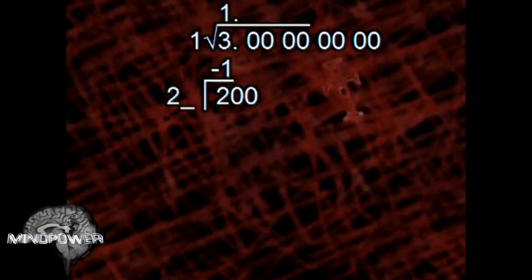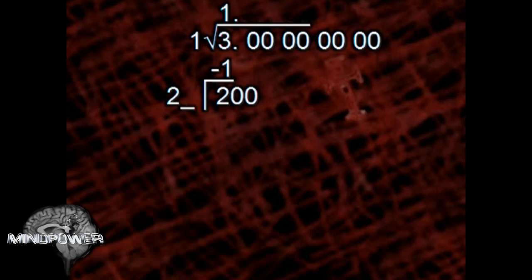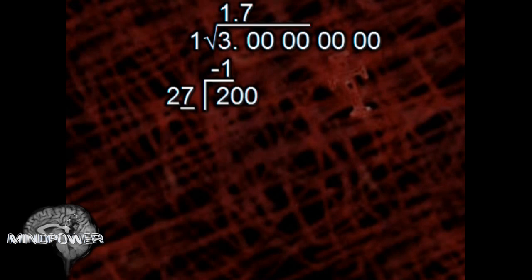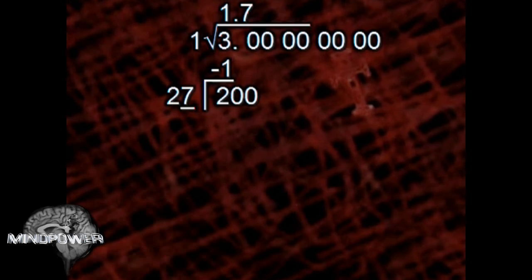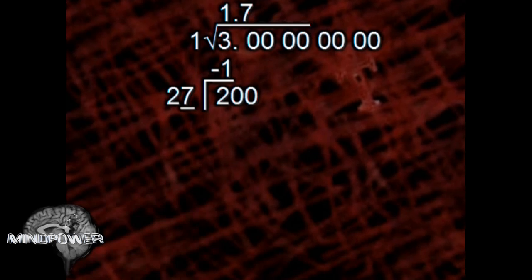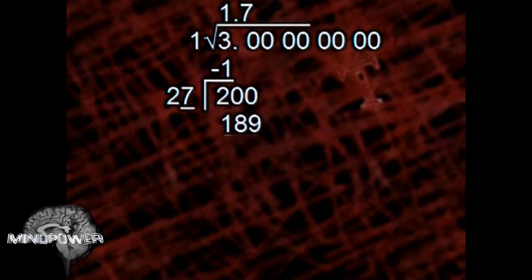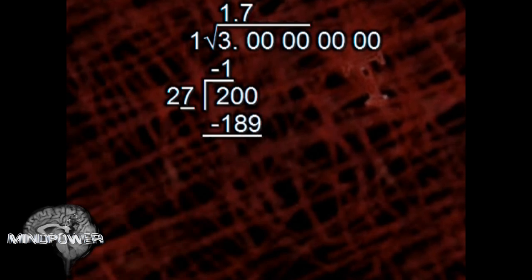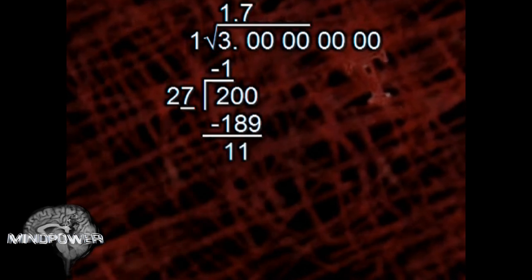So we need this to be 20-something. The number that we put next to it will also go on top. We selected 7 because 7 times 27 is the largest set of multipliers we can use that would still be equal to or smaller than 200. 7 times 27 is 189. Now we need to subtract that from 200. That would be 11.